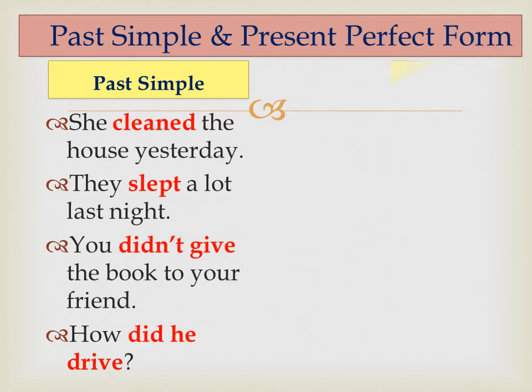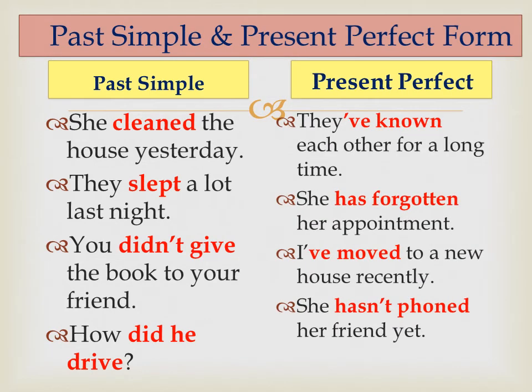For the present perfect, here are some examples: 'They've known each other for a long time,' 'She's forgotten her appointment,' 'I've moved to a new house recently,' 'She hasn't phoned her friend yet.' For a positive sentence: subject + has/have + past participle. For negative: subject + hasn't/haven't + past participle. For a question: has/have + subject + past participle.